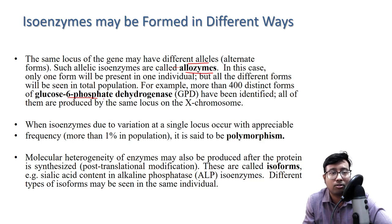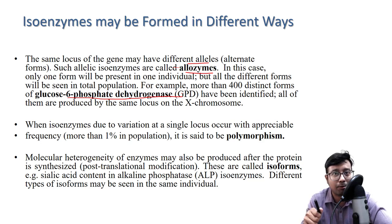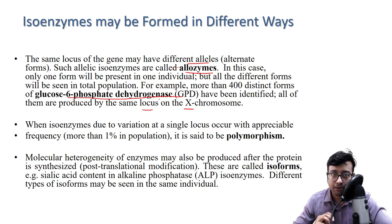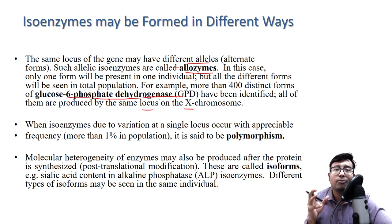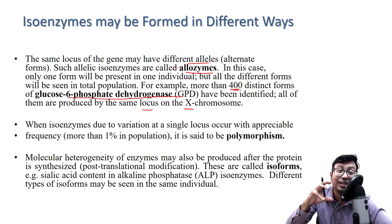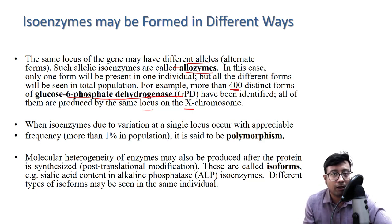For example, the enzyme glucose-6-phosphate dehydrogenase — a very important enzyme of the HMP shunt pathway — is present on the X chromosome at the same locus. However, in different individuals the form is different; the enzyme performs the same function but looks different genetically. In fact, glucose-6-phosphate dehydrogenase has more than 400 distinct forms when considering the total population.